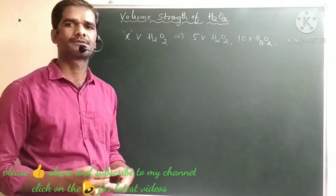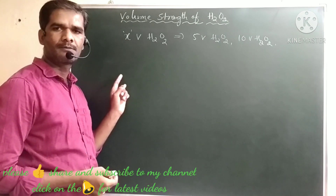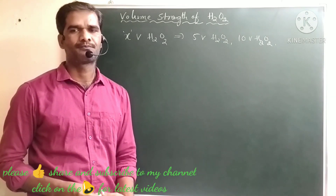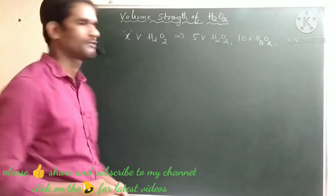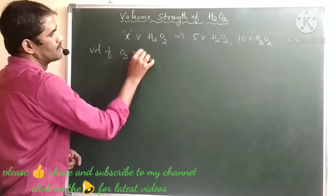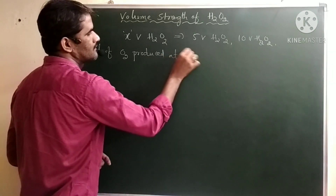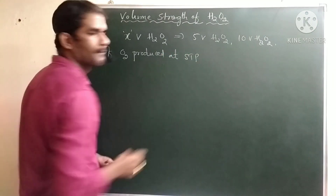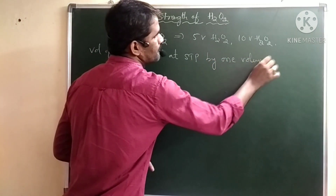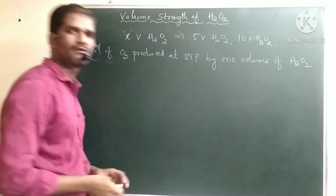What does it mean? X V H2O2 means the volume of oxygen produced at STP by one volume of H2O2 is its volume strength. So volume strength means the volume of oxygen produced at STP conditions by one volume of H2O2.